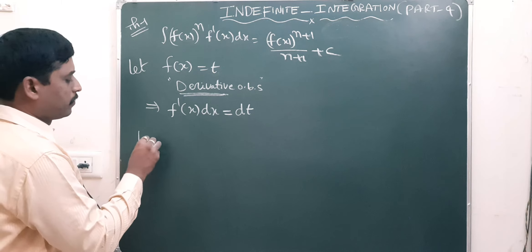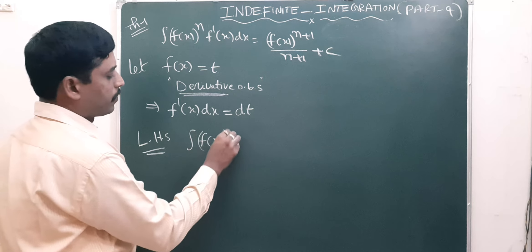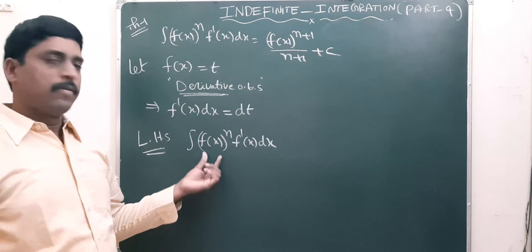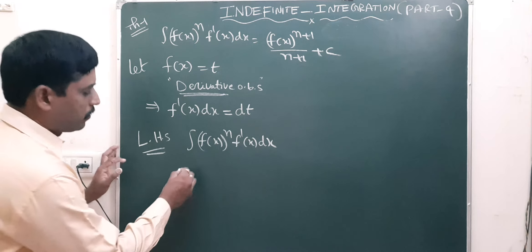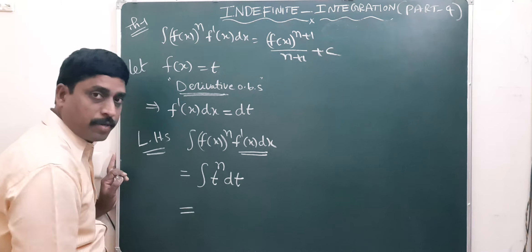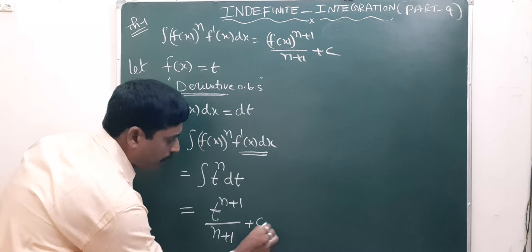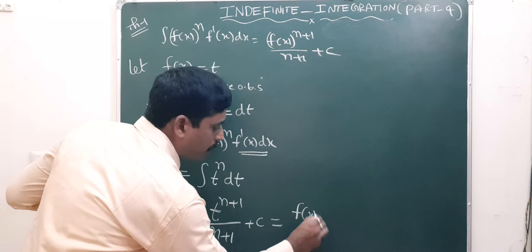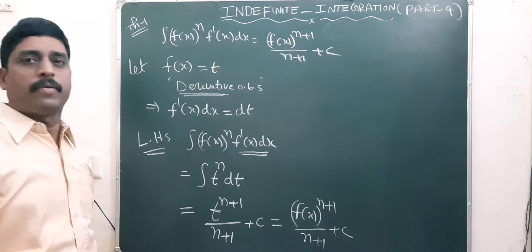So f'(x) dx is equal to dt. So in this formula, the statement is integral of f(x) raised to power n into f'(x) dx. In this statement, f(x) we write as t, and f'(x) dx we substitute as dt. So integral of t to the power n dt, which equals t to the power n+1 by n+1 plus c. In the place of t we write f(x), giving f(x) raised to power n+1 by n+1 plus c.